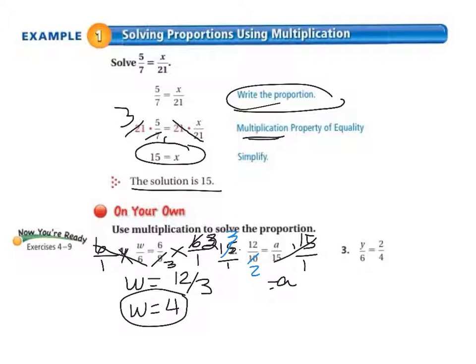So when we multiply, we have 3 times 12, which equals 36 on the top of our fraction, and 1 times 2, which equals 2 on the bottom of our fraction. So 36 divided by 2 equals 18, which equals a. So our solution is 18.